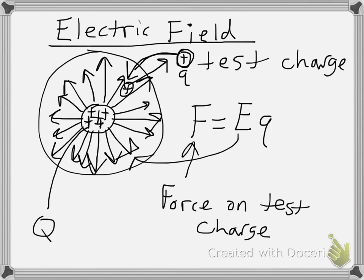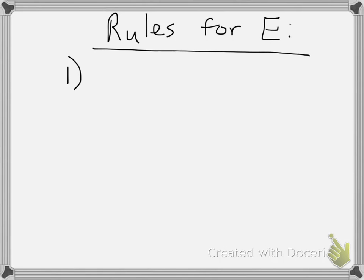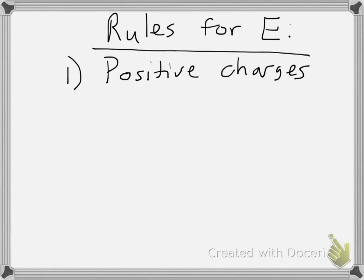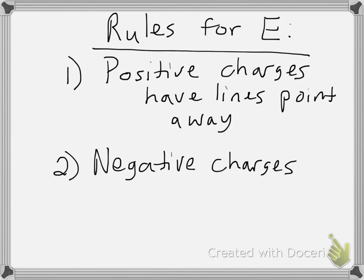Here are some rules for looking at the electric field. Rule number one: positive charges have their field lines pointing away. Rule number two: negative charges have their field lines pointing toward them.